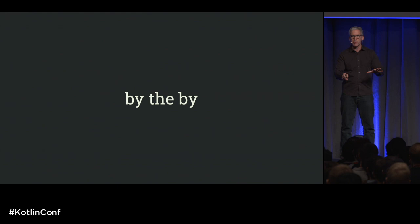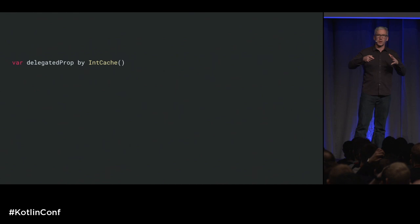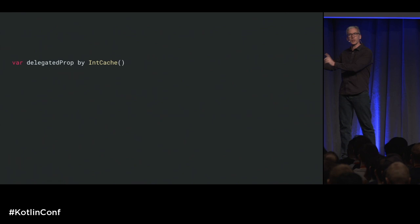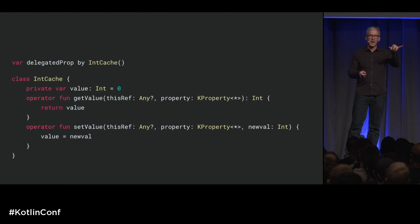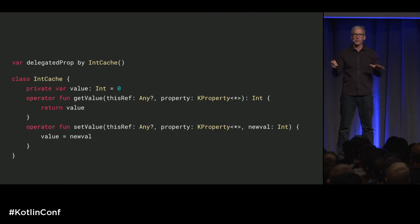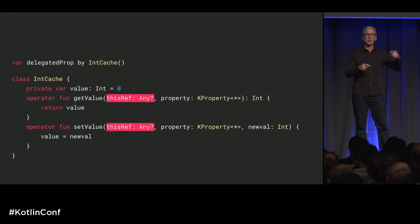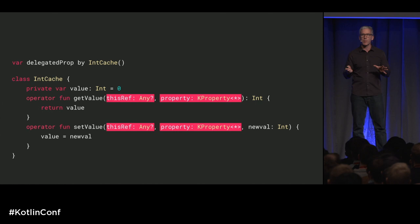Now let's talk about property delegation. Here's a simple way to use it: you're saying, I have a property, but instead of having get/set directly, I want to use another object. Whenever get and set are called, I want you to call this other class. Here's an IntCache class I created with a private backing field and get/set — this is the contract you have. There are a couple of weird things: one is, why is the instance of the class that holds the property being passed in? I have a backing field, I could just return that. Also, there's this KProperty object being passed in — again, I don't need this information.